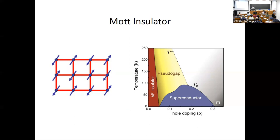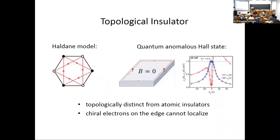The Mott insulator can give rise to many interesting phenomena. When you dope it, it can turn into a superconductor; at higher temperature there may be a pseudogap state. All this is strongly motivated by the study of high temperature superconductors, or cuprates.